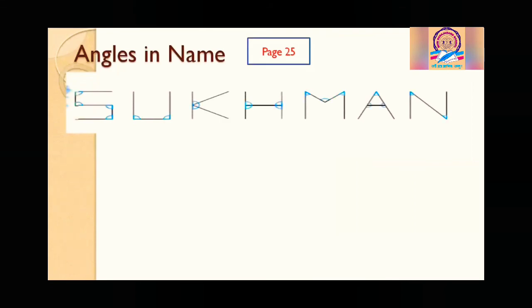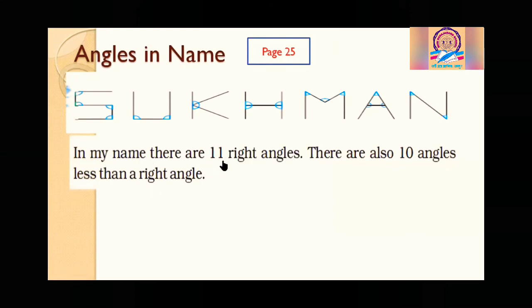Angles in names — names do have angles. Look at the name Sukman. In this name, several angles are made. There are 11 right angles — exactly 90 degree angles — in the name. Looking at the letter S, these corners are exactly 90 degrees. Counting through the name: 1, 2, 3, 4, 5, 6, 7, 8, 9, 10, 11 — so 11 right angles.